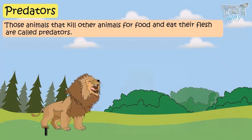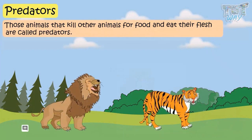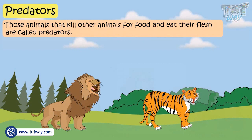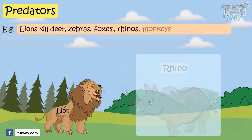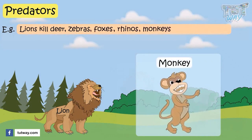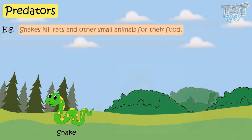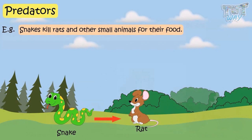Those animals that kill another animal for food and eat the flesh of other animals are called predators. For example, lion kills deer, zebras, foxes, rhinos, and monkeys for its food. Snakes kill rats and other small animals for their food.